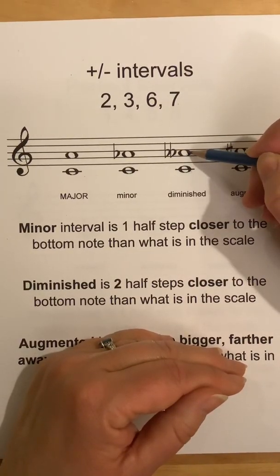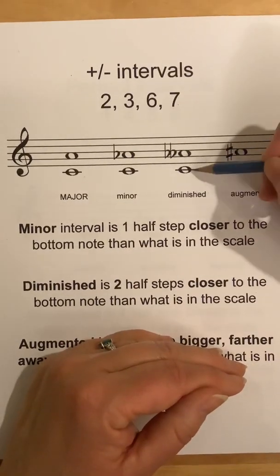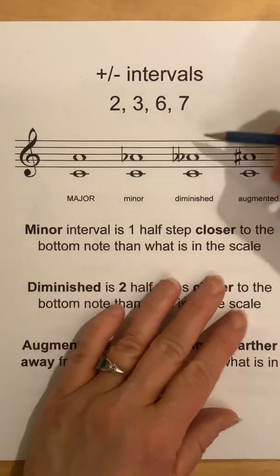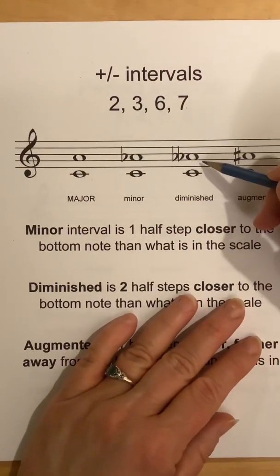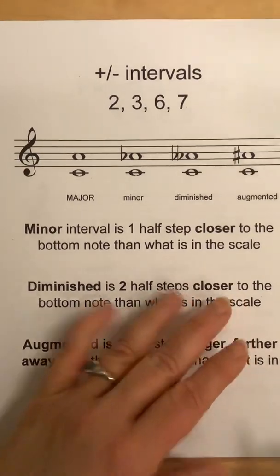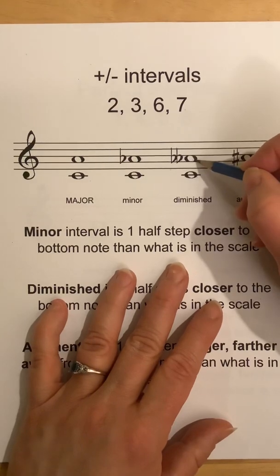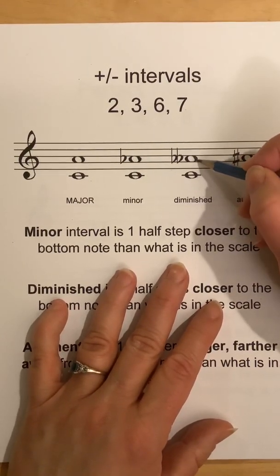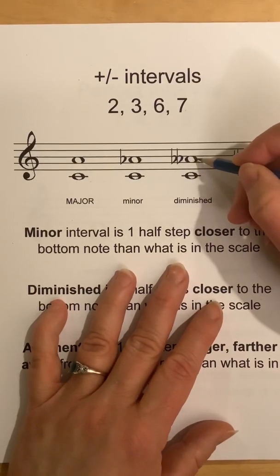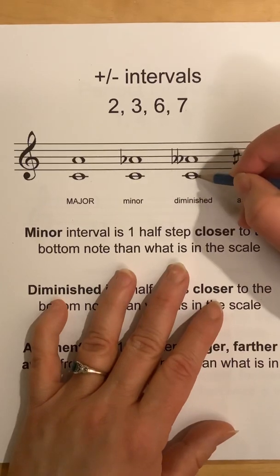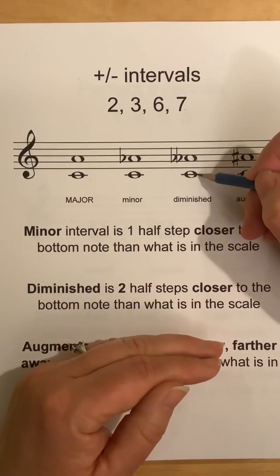So we're using an A double flat. Yes, we could change the bottom note, but I want to work with C right now. We made the A go to an A-flat, then to an A double flat. Some students say that A double flat is a G — well, it sounds like a G, but C to a G is a fifth. We are talking about sixths, so we have to keep it as some kind of an A. That's why in theory we have double flats and double sharps. They don't change it to a G-natural because that is something else. So we use an A double flat because we have to keep it as a sixth. That's diminished: two half steps closer to the bottom note.